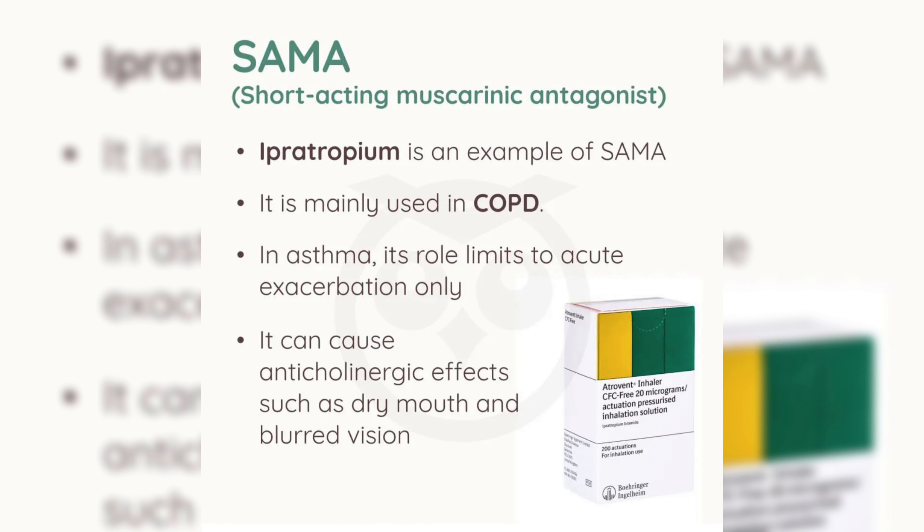Short-acting muscarinic antagonist, SAMA. Ipratropium is an example of short-acting muscarinic antagonist. It is mainly used in chronic obstructive pulmonary disease; in asthma, its role is limited to acute exacerbation only. It can cause anticholinergic effects such as dry mouth and blurred vision.